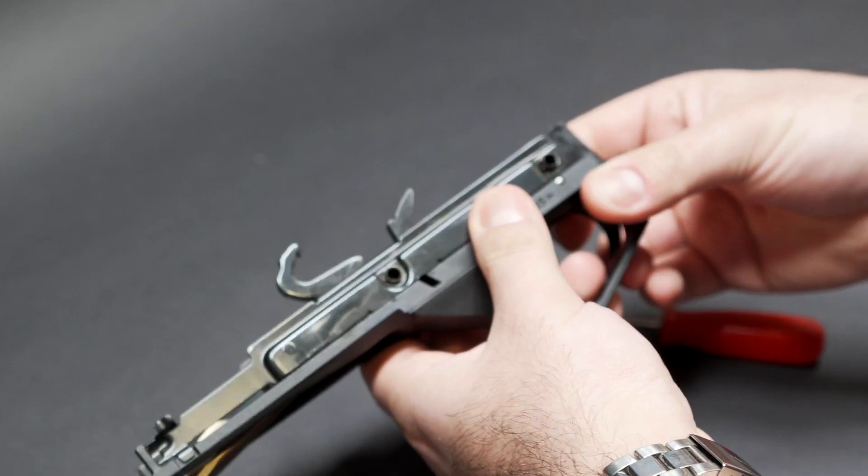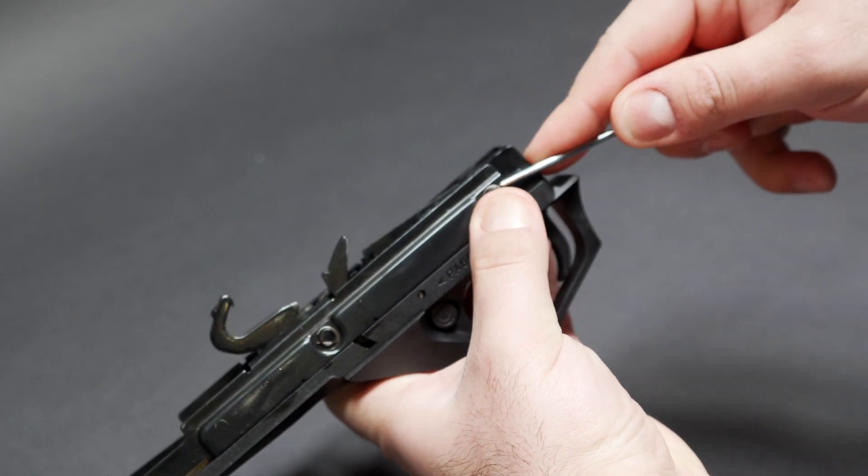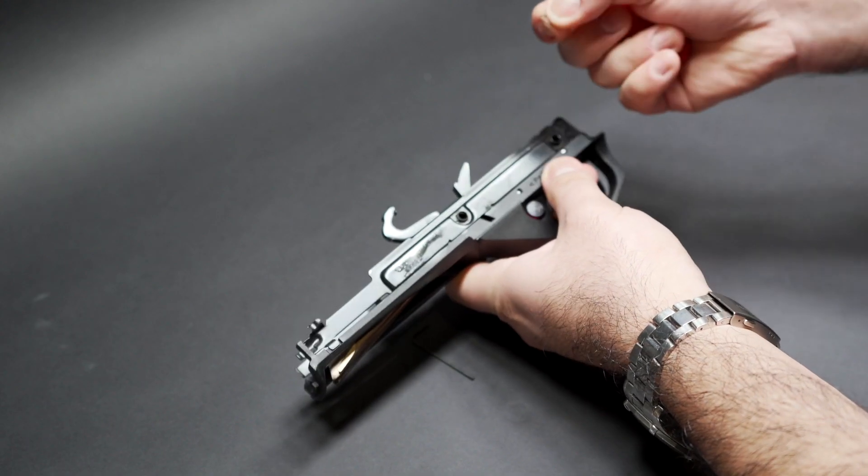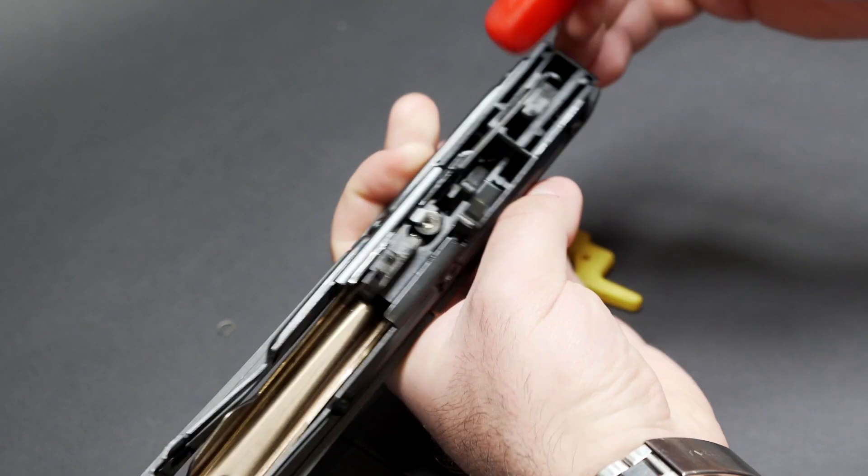Then we're going to remove this rear clip here. Put your thumb over it and lever up over the curved edge and pull it back until it snaps off. They do like to fly off into oblivion, so do be careful with that.